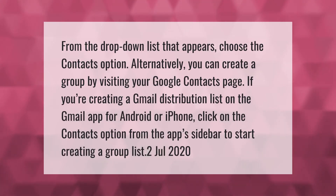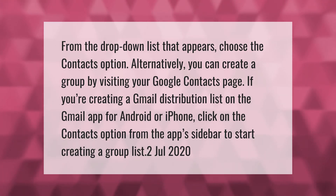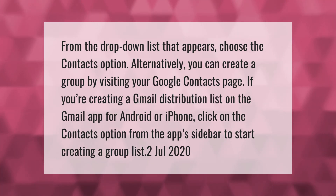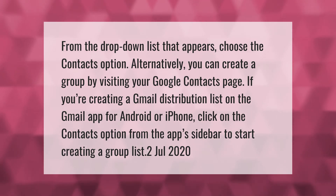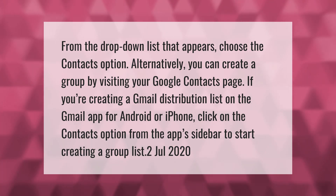From the drop-down list that appears, choose the Contacts option. Alternatively, you can create a group by visiting your Google Contacts page. If you're creating a Gmail distribution list on the Gmail app for Android or iPhone, click on the Contacts option from the app sidebar to start creating a group list.